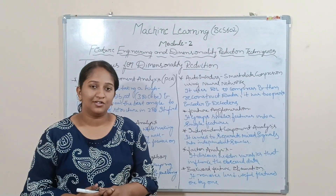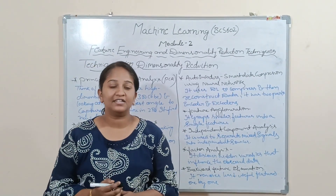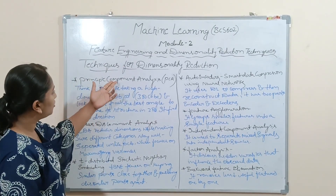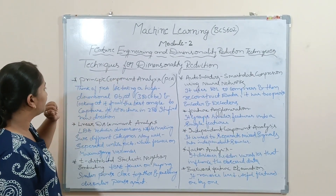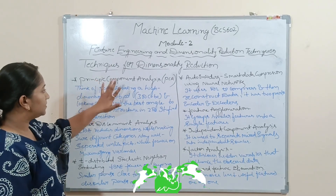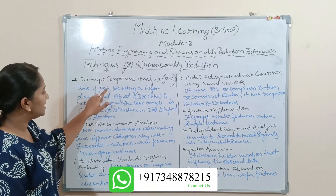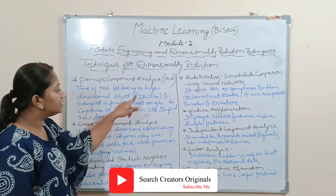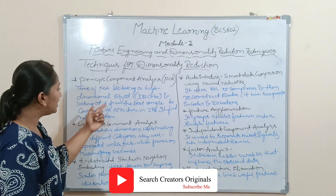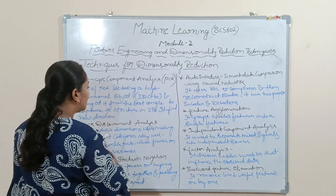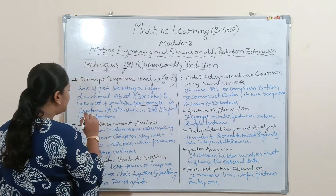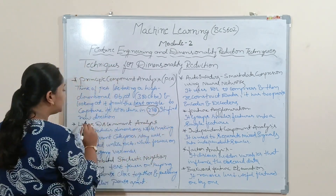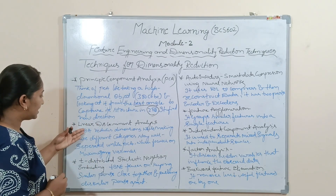Now let's see the techniques for dimensionality reduction. The first is Principal Component Analysis (PCA). Think of PCA like taking a high-dimensional object — like a 3D cube — and looking at it from the best angle to capture its structure in 2D. It finds new directions in the data.